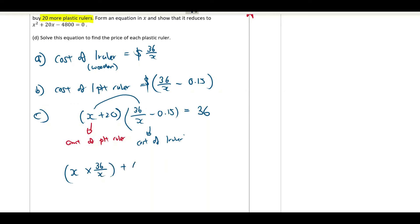Plus 20 times 36 over X, which is this times this. Next, minus 0.15X, because this is this times this and then this times this minus 0.15 times 20 equals to 36.